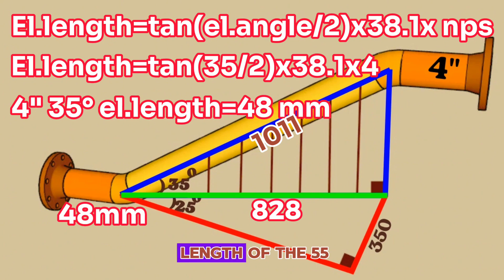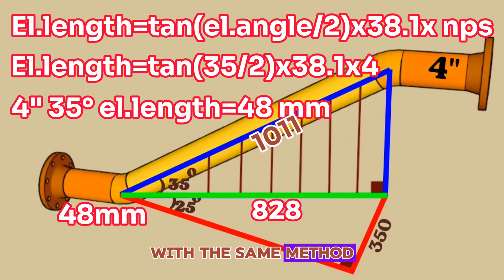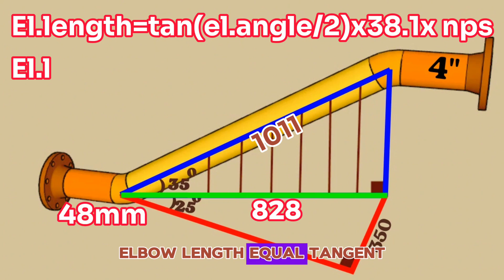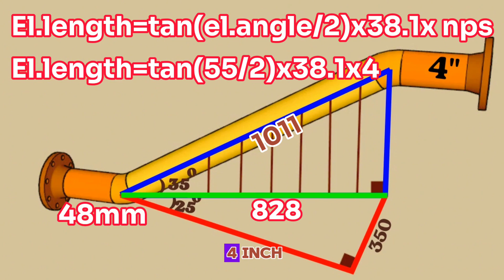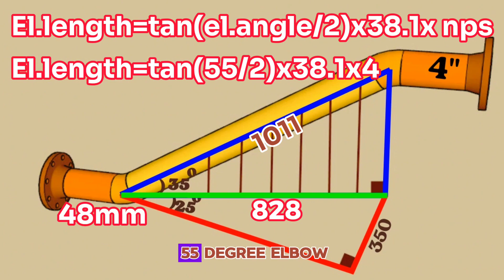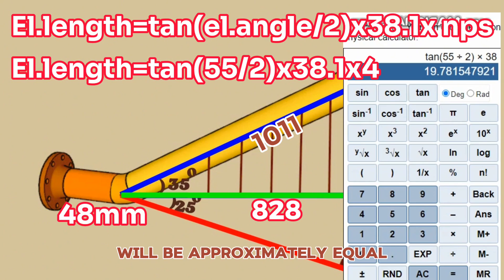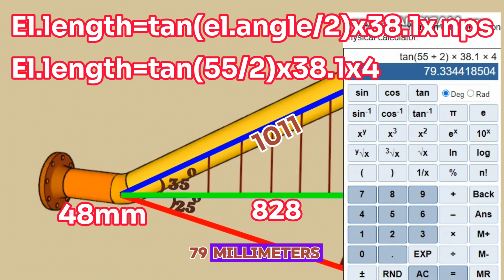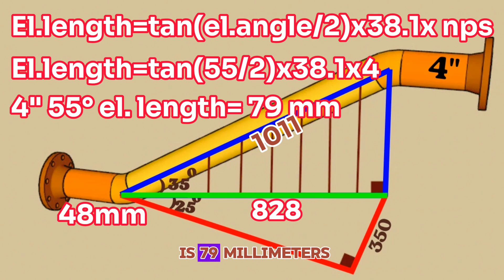Let's now calculate the length of the 55-degree elbow from center-to-end with the same method. Elbow length equals tangent(55/2) × 38.1 × 4 inch. Using a scientific calculator again: tangent(55/2) × 38.1 × 4 is approximately equal to 79 millimeters. So we found that the 4-inch 55-degree elbow's center-to-end dimension is 79 millimeters.